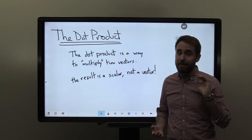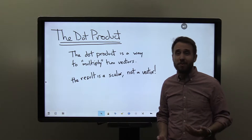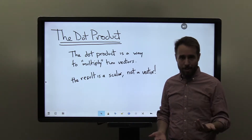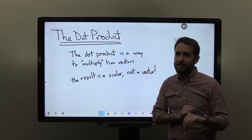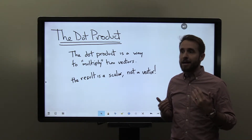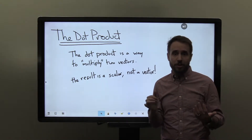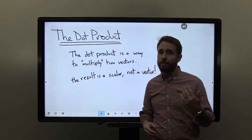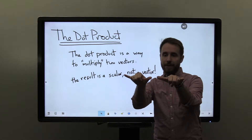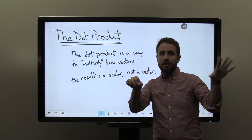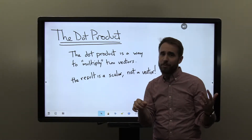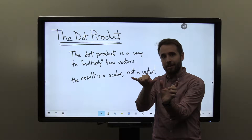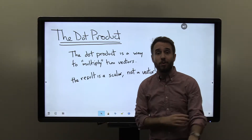Last time we talked a little bit about vectors, specifically vectors in two-dimensional space. We talked about what they were, how to visualize them, and our two big operations: vector addition and scalar multiplication. In vector addition, we took a vector plus a vector and the end result was another vector. In scalar multiplication, we took a vector times a scalar, and the end result was also another vector.